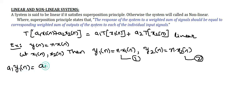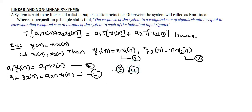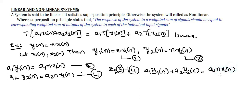Now I am multiplying equation 1 and equation 2 by arbitrary constants a1 and a2 respectively. So a1·y1(n) = a1·n·x1(n) — equation 3 — and a2·y2(n) = a2·n·x2(n) — equation 4. Adding equation 3 and equation 4 gives: a1·y1(n) + a2·y2(n) = n·[a1·x1(n) + a2·x2(n)]. Let this be equation 5.